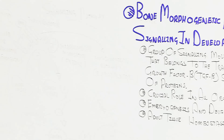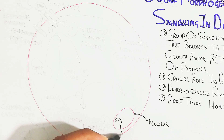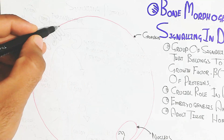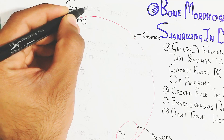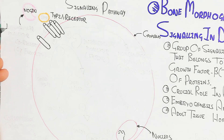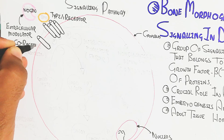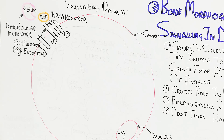This superfamily is also crucial for adult tissue homeostasis. Previously, research focused on bone morphogenetic protein, but later research showed many different functions. The nucleus and cytoplasm are shown, with type 1 and type 2 BMP receptors present. Noggin is an extracellular modulator that binds BMP and prevents it from binding to the type 1 or 2 receptor, but when required, BMP is released from noggin to bind the receptor.